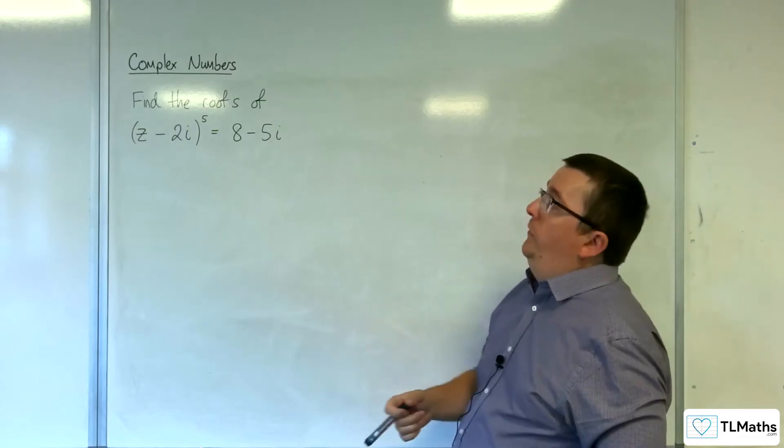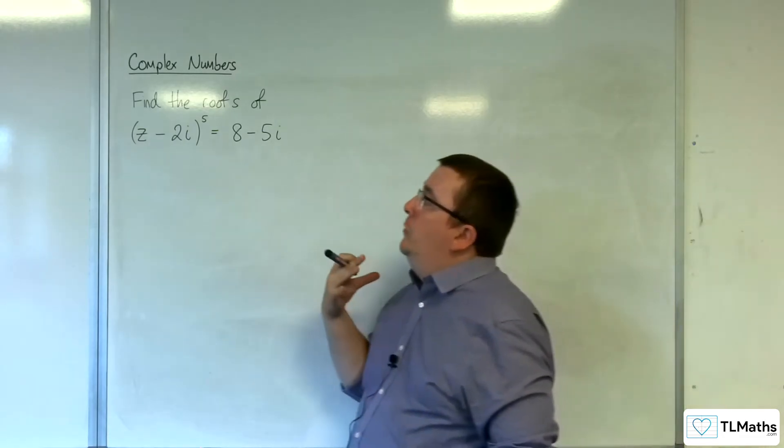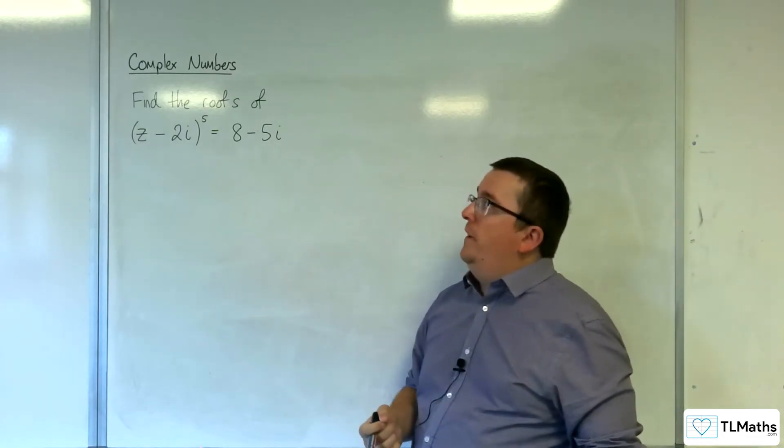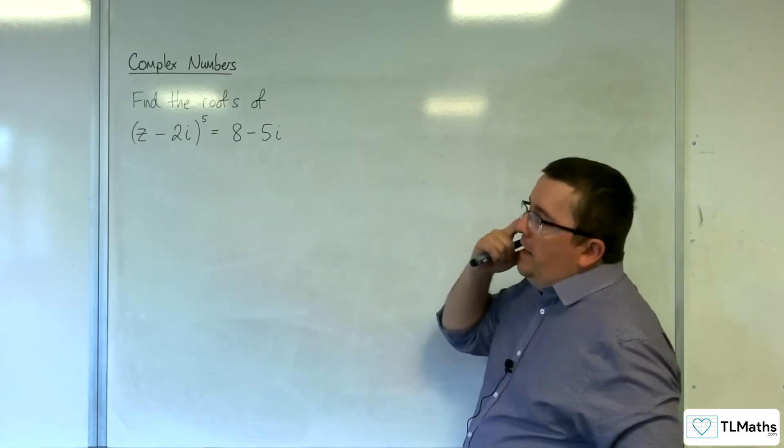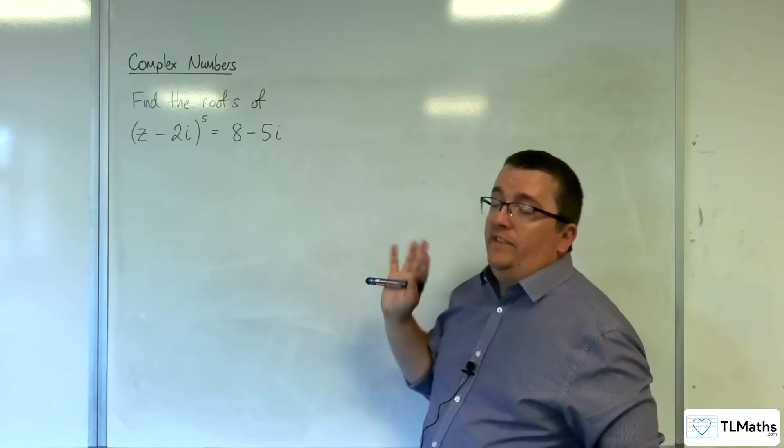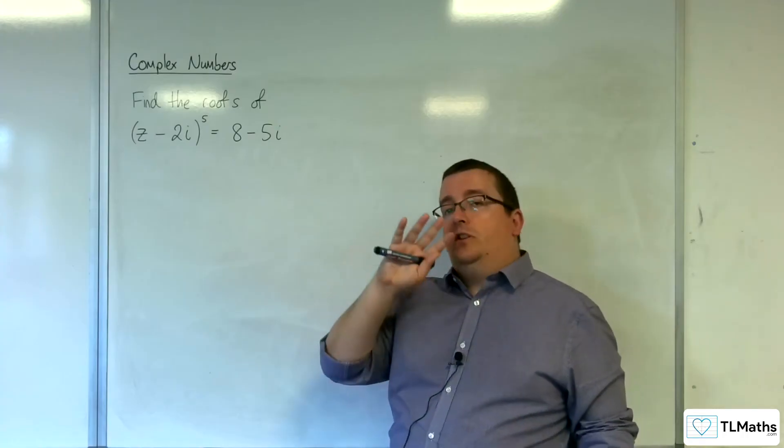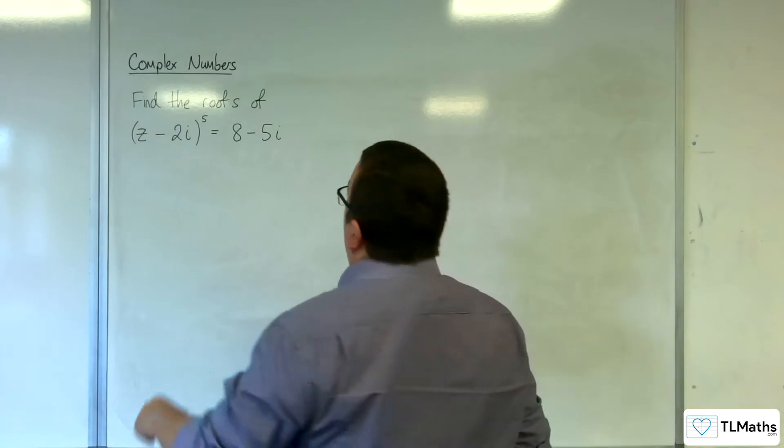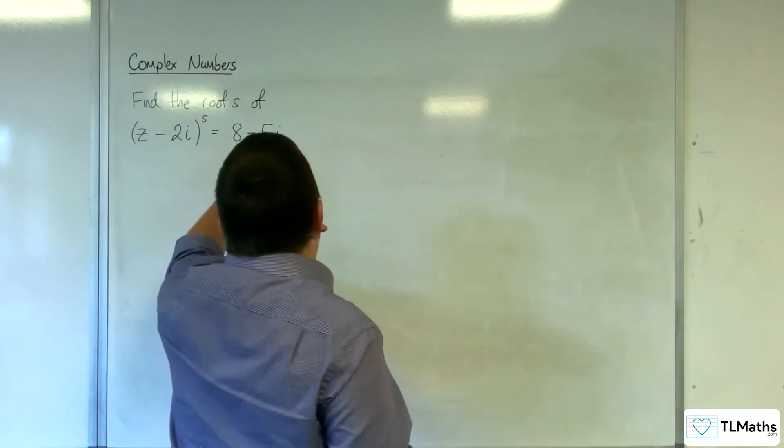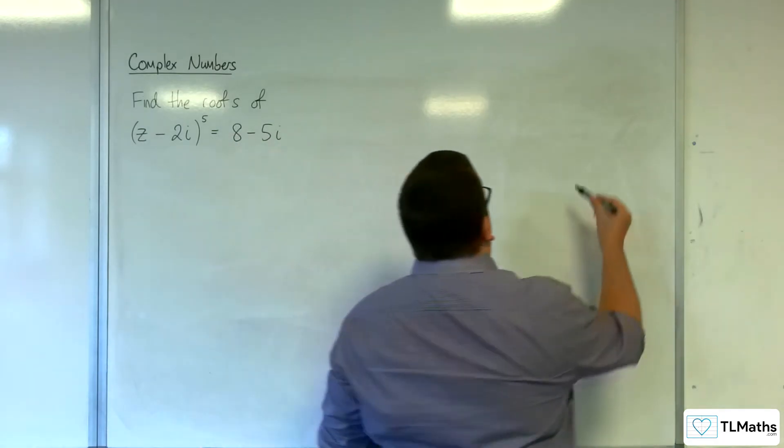So in this video I want to find the roots of this equation: z take away 2i to the power of 5 is equal to 8 take away 5i. What I want you to do is just ignore that z take away 2i for the moment. We're just going to solve it as we did in the previous video. So I'm going to have to find the modulus and argument of 8 take away 5i. That's the first job.